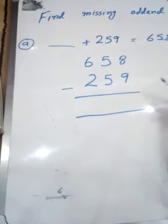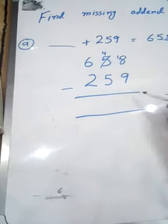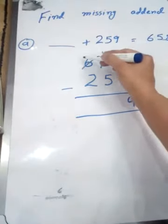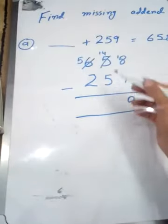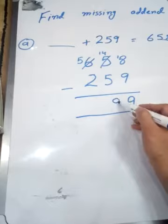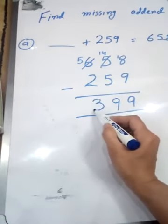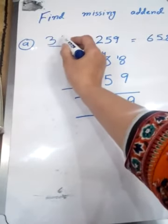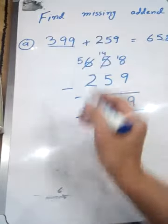And now subtract it after borrowing. That's how we can find our answer. 14 minus 5 is 9, 5 subtract 2 is 3. So our answer here is, our first missing addend is 399.